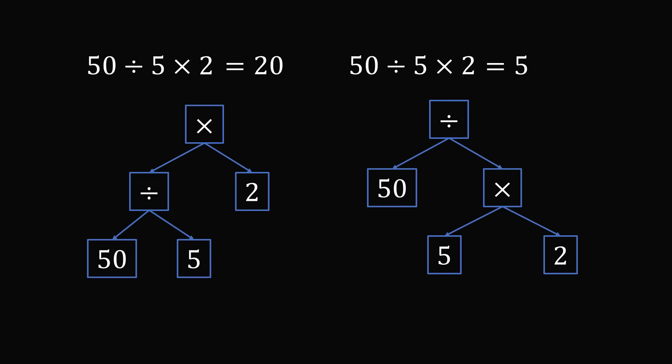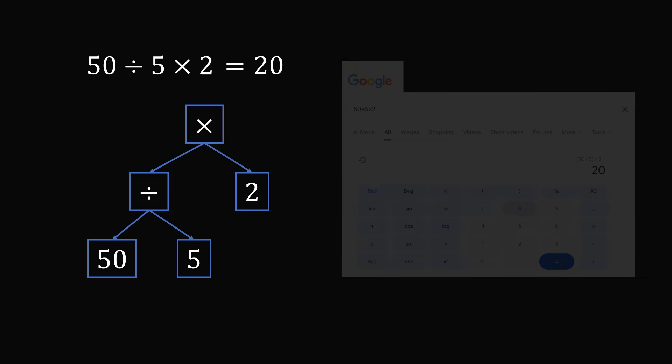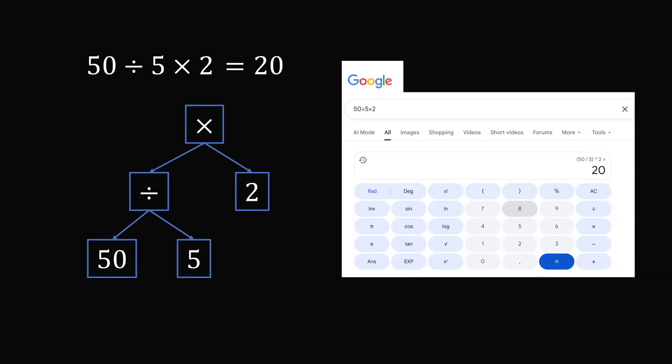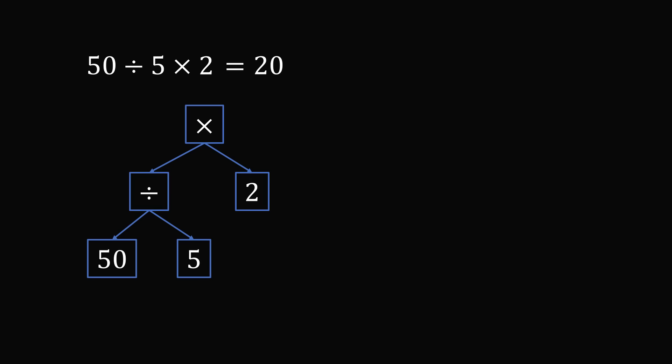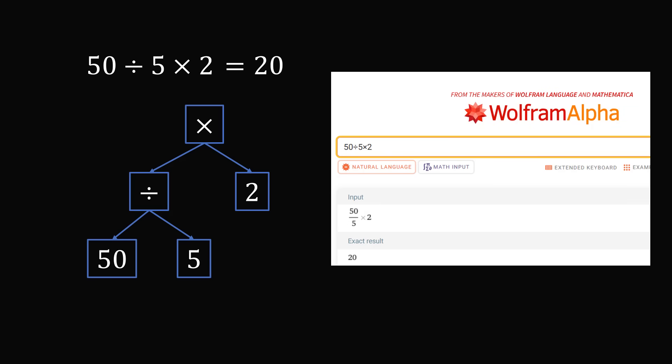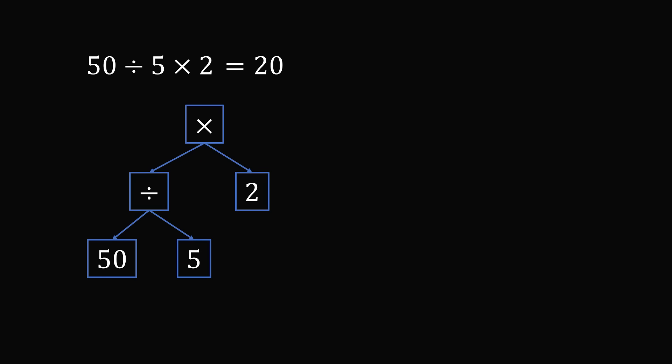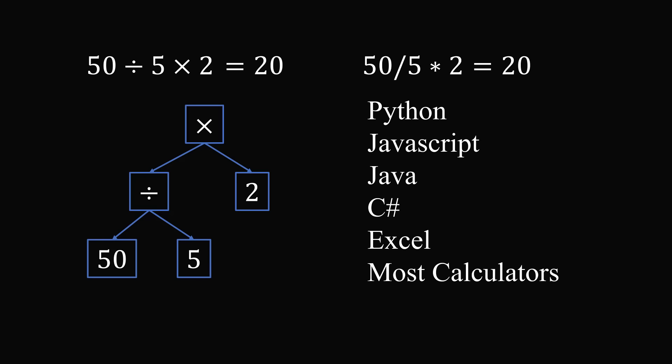So what do calculators actually do? Well, if we input this into Google, it definitely goes from left to right, and it will do the division first and give the answer of 20. The same is true of Wolfram Alpha. In fact, if you do this expression into pretty much any modern programming language, like Python, JavaScript, Java, C-sharp, Excel, or most calculators, you're going to get the result of 20.